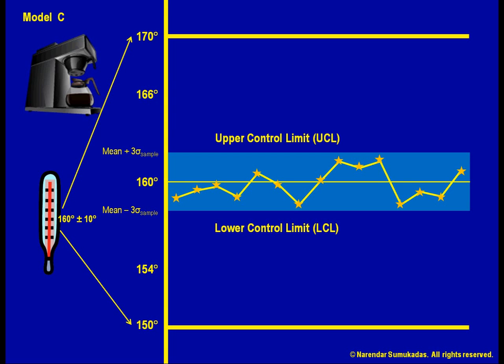The variability of the sampling distribution, sigma sample, is related to the variability of the process distribution, sigma process, as shown. As you can see from this relationship, the larger the sample size n, the narrower the normal behavior band for the sample mean will be.